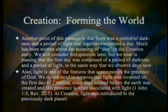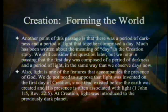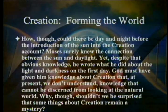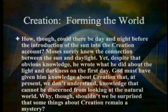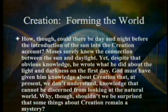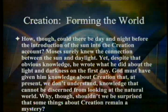Light is one of the features that accompanies the presence of God. We do not need to suppose that light was invented on the first day of creation, since God existed before the earth was created and his presence is often associated with light. At creation, light was introduced to the previously dark planet. How, though, could there be day and night before the introduction of the sun? Moses surely knew the connection between the sun and daylight, yet despite that obvious knowledge, he wrote what he did. God must have given him knowledge about creation that at present we don't understand — knowledge that cannot be discerned from looking at the natural world.